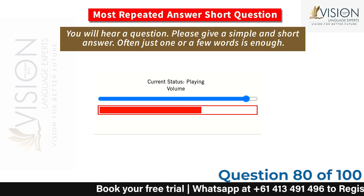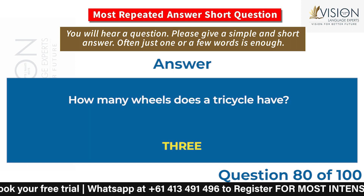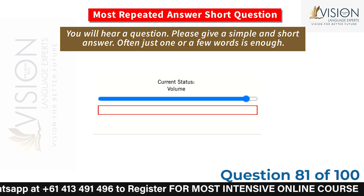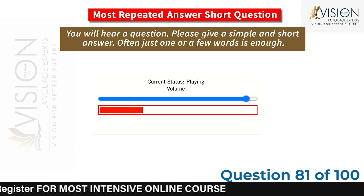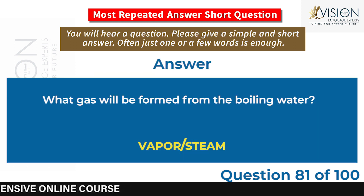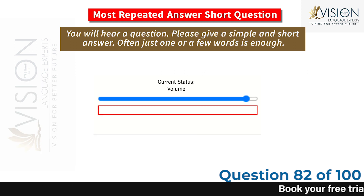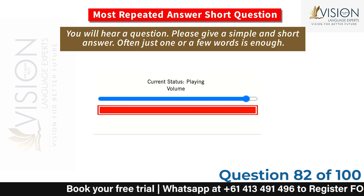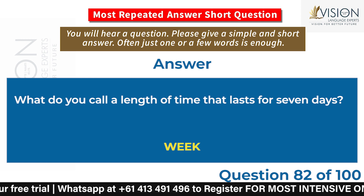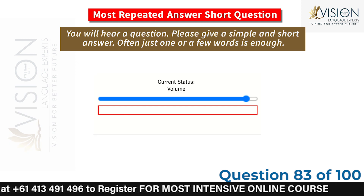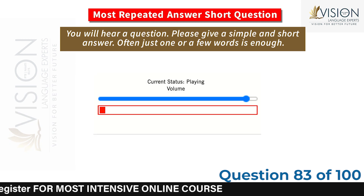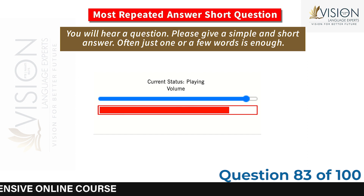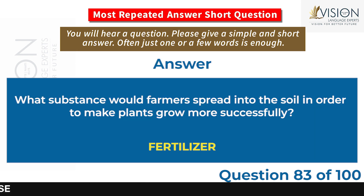How many wheels does a tricycle have? Three. What gas will be formed from boiling water? Vapor / steam. What do you call a length of time that lasts for seven days? Week. What substance would farmers spread into the soil in order to make plants grow more successfully? Fertilizer.